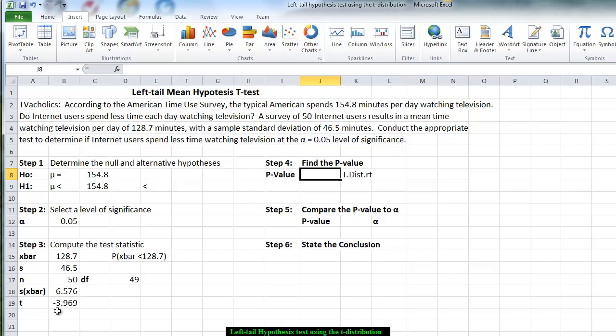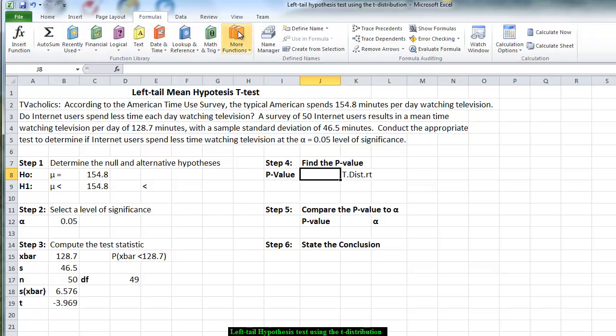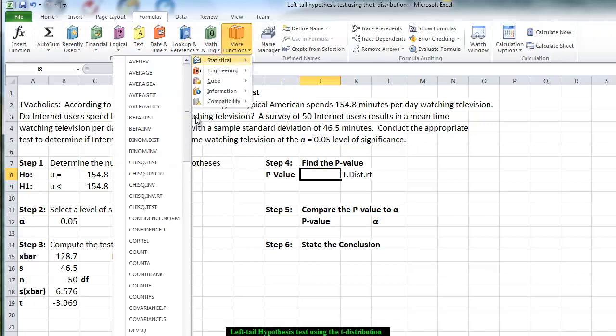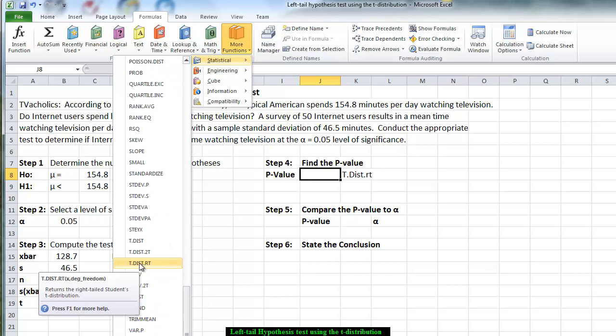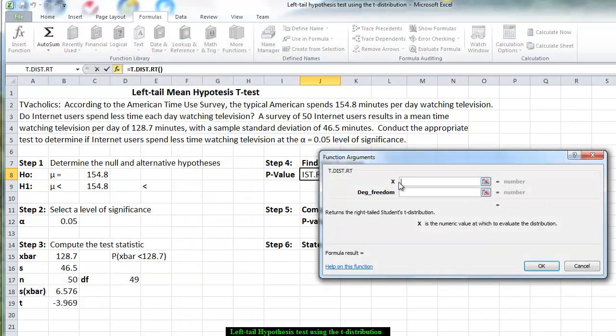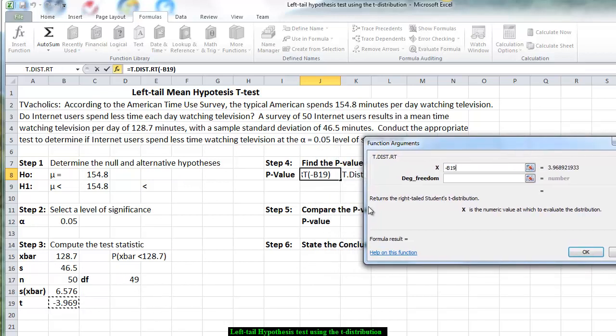We're going to negate the t value to make it a positive number. So we go to our formulas, we go to statistical, we go to our T.DIST.RT. Remember the t is the t value, the x is the t value. So we put in the negative to make this a positive number. Notice it's almost four standard deviations above the mean. The degrees of freedom is the forty-nine.